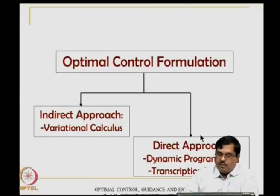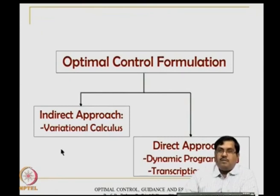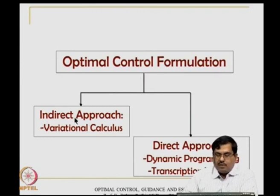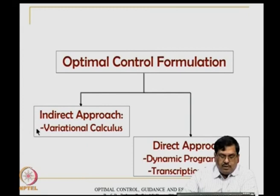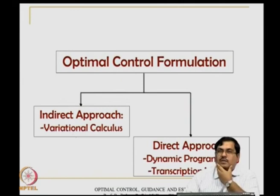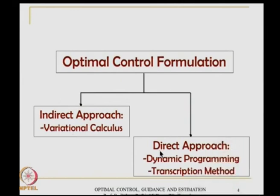So let us see the motivation first. In a generic view, optimal control formulation can be thought of as follows. One is the indirect approach, one is the direct approach. In the indirect approach, we studied variational calculus, which leads to a two-point boundary value problem. In the direct approach, we have dynamic programming, which we have already studied, and then we will have the transcription method, which we are going to study today.